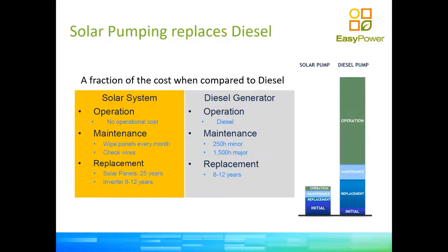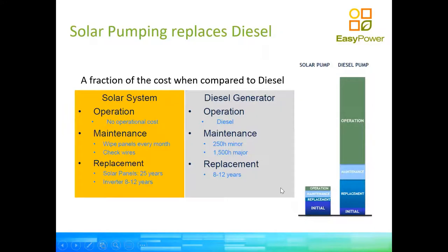The initial expenditure to set up a solar pumping system is without a doubt higher — probably twice as much as a diesel setup — but over a long period of time, the running costs are vastly different, going directly to the bottom line. Good quality solar panels on the market have about a 25-year warranty. The VSDs we sell also have a warranty from the supplier and manufacturer.